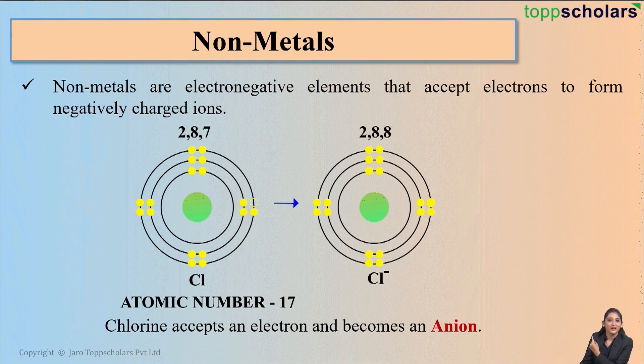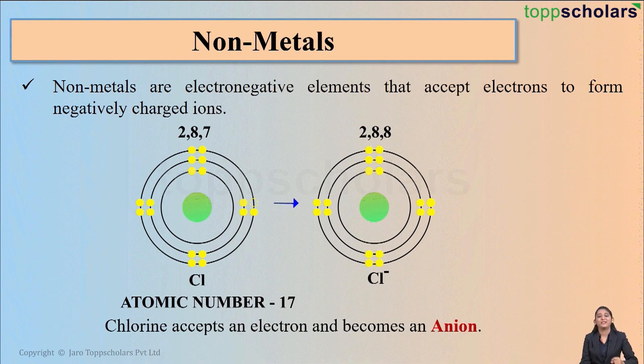As you can see over here now, how many electrons are present in the outermost shell? 8 electrons. That means now chlorine becomes stable.